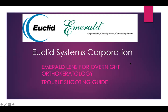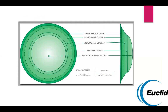I want to talk about a wonderful orthokeratology technology called Euclid — the Emerald lens. The lens has different curves: the back optic zone radius is the optic zone that's going to flatten the front central surface. Then you have the reverse curve where epithelial cells accumulate, and the alignment curves and peripheral curves, which are important for comfort and centration of the lens.